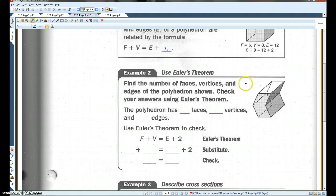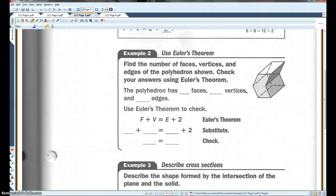Example two, use Euler's theorem. Find the number of faces, vertices, and edges of the polyhedron shown. Check your answers using Euler's theorem.